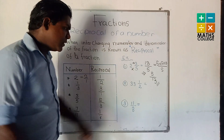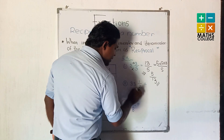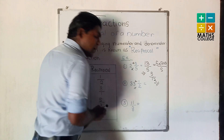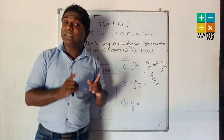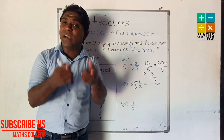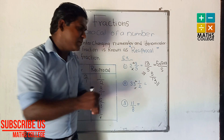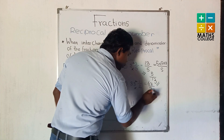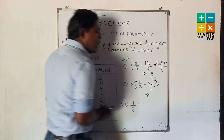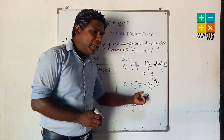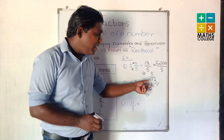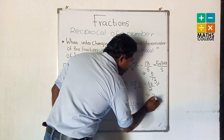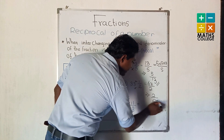Second example: 3 and 1/2. 2 multiplied by 3, addition 1. 2 multiplied by 3 is 6, addition 1 gives 7. So that is 7 upon 2. What is the reciprocal? When interchanging denominator and numerator: 2 upon 7.